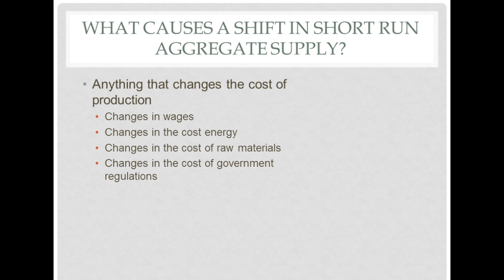It's worth noting that although the aggregate market measures the entire economy, since every single product and every single person is one small part of it, changes in any one part — whether the housing market, the wine industry, or any other — will affect the aggregate supply curve, even if just by a small amount, or the aggregate demand curve.